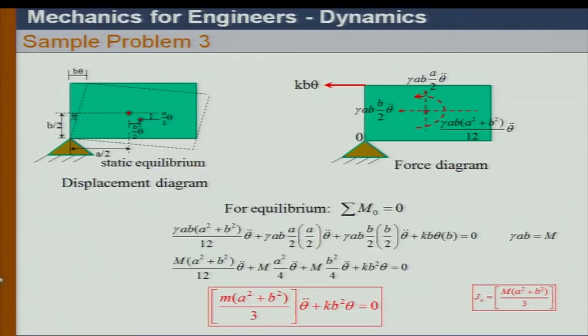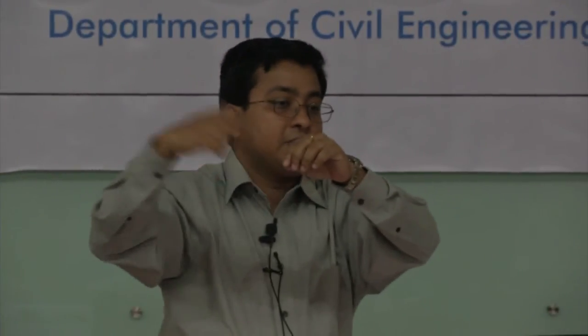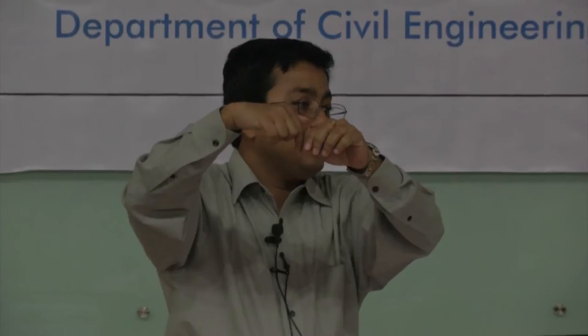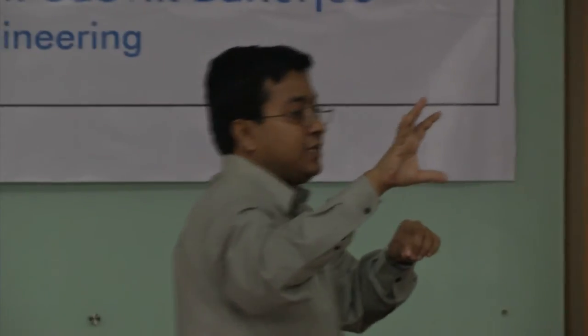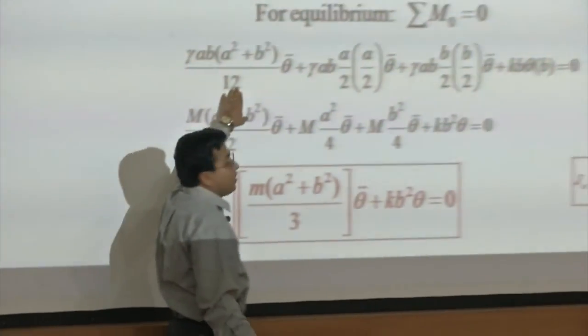The displacement B/2 times theta pushes the mass center horizontally, and it also comes down by A/2 times theta. So two displacements take place — one horizontal, one vertical — giving translational inertia forces both ways. Then I add the rotational inertia force about the mass center, which is M(A² + B²)/12.